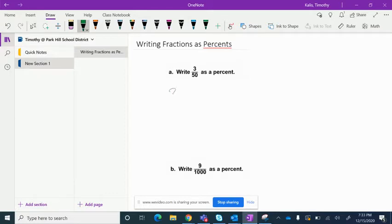So in this first one we are going to take three fiftieths as equivalent to something over 100 because we know that percents are out of 100.